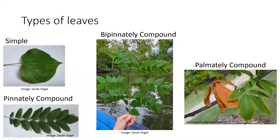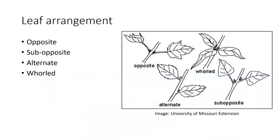We also have things like our buckeye trees that are palmately compound — the leaves all originate at one single point of origin.